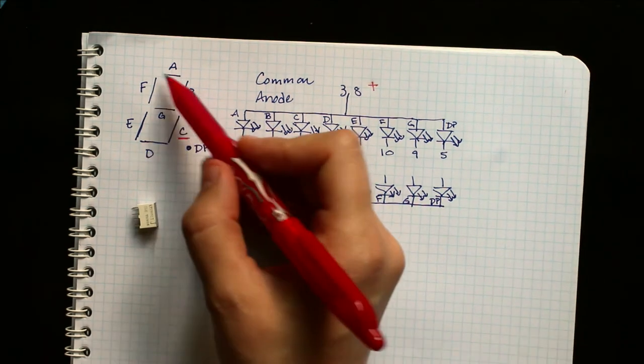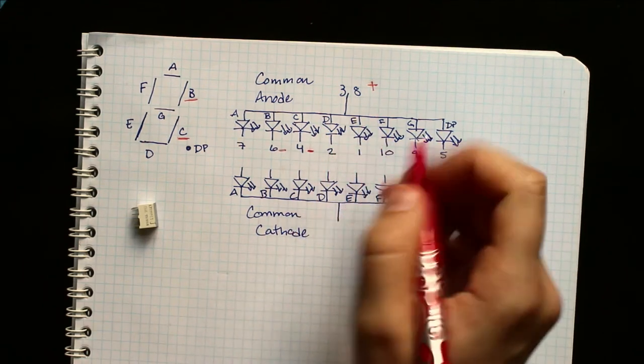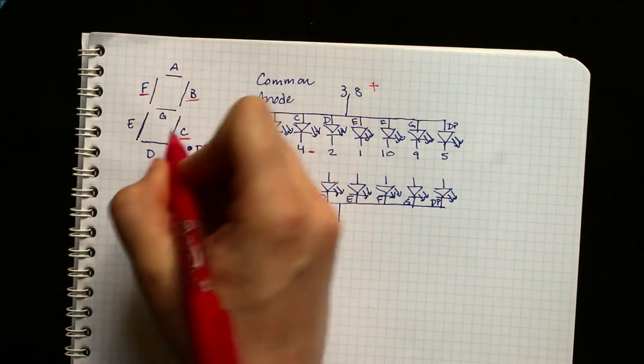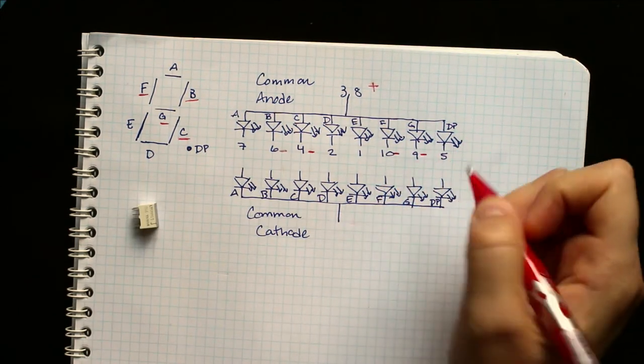If you wanted, for example, a 4, you would have to do the same, only you would also need the F and the G. So we would also have to connect these two to negative.